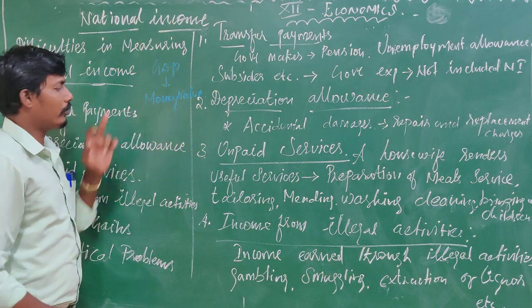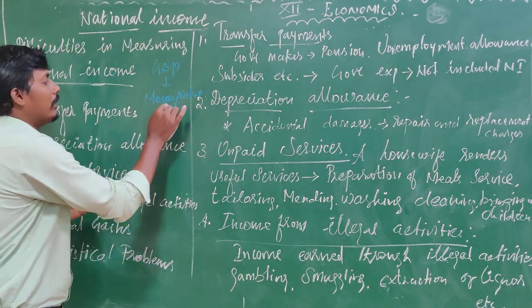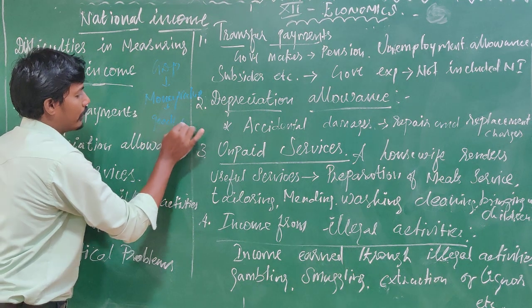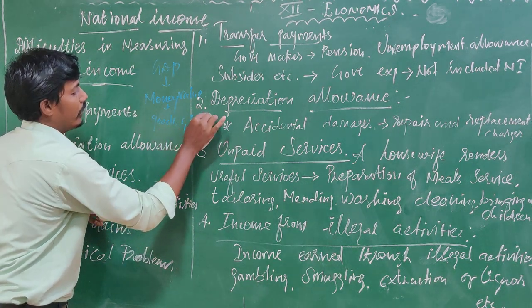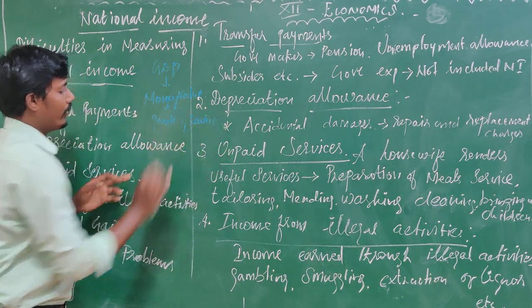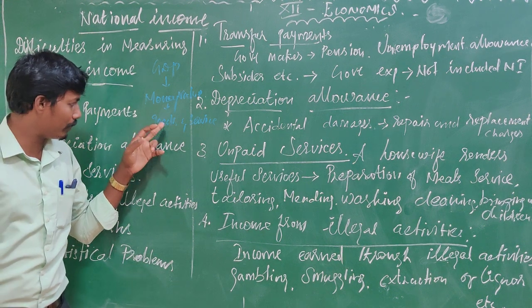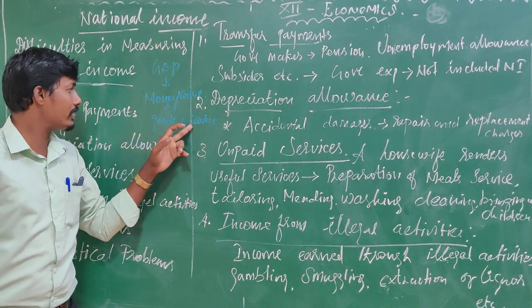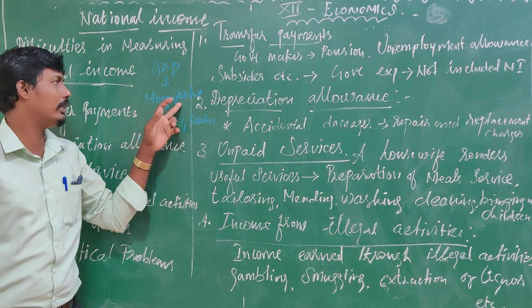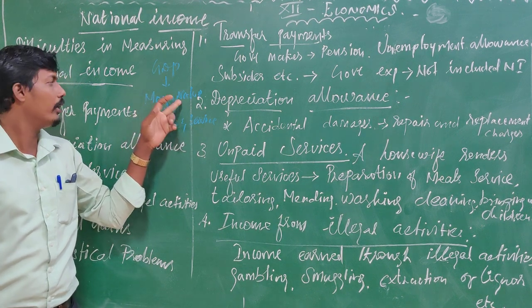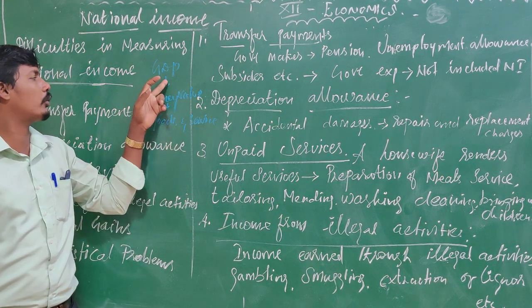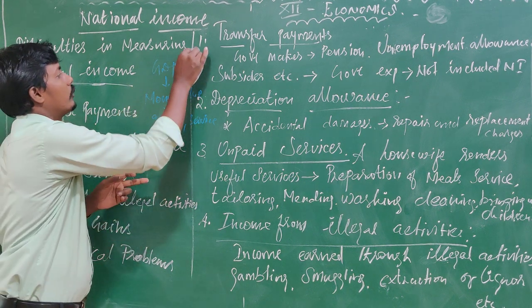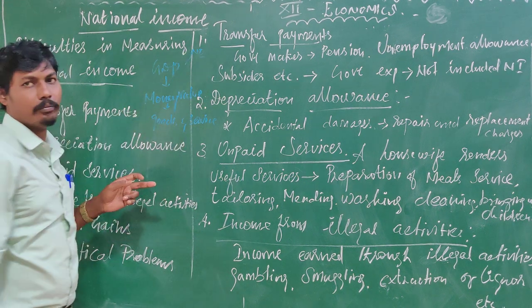That is money value. If we measure the value, it is goods and services. What is money value? This is the cost. What we say is national income.